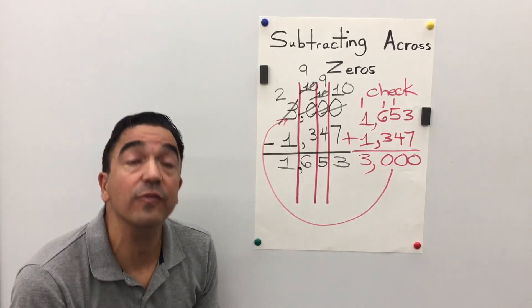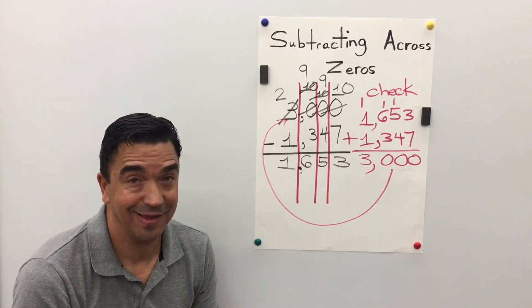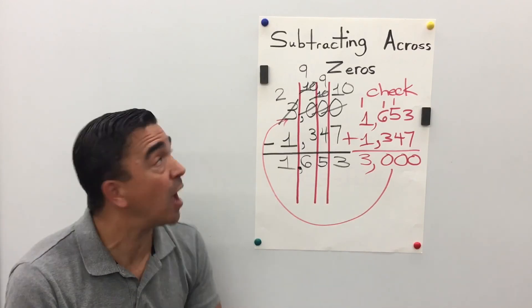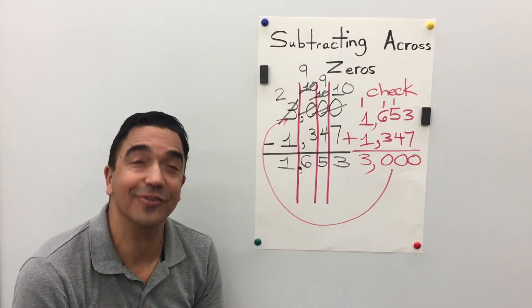Therefore, we know we've done this problem correctly. That concludes our lesson on subtracting across 0's.